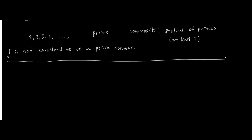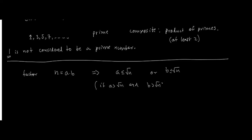A number is either prime or composite. Composite means it can be expressed as a product of at least two primes. A useful fact: if n = a*b, then either a ≤ sqrt(n) or b ≤ sqrt(n), since if both were greater than sqrt(n), their product would exceed n.